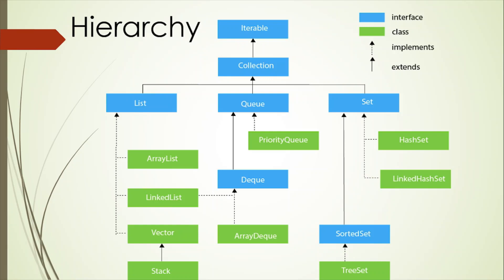Now, let's see the hierarchy of all the interfaces and classes present in the Collection Framework. The java.util package contains all the classes and interfaces required for Collection Framework. The Collection Framework contains an interface named Iterable, which provides the iterator to iterate through all the collections. This interface is extended by the main Collection interface, which is further extended by other interfaces like List, Queue, or Set. By doing this, List, Queue, and Set interfaces inherit the properties present in Iterable as well as Collection. This interface has multiple implementations — one of the most widely used is ArrayList. Other implementations include LinkedList, Vectors, and Stack.